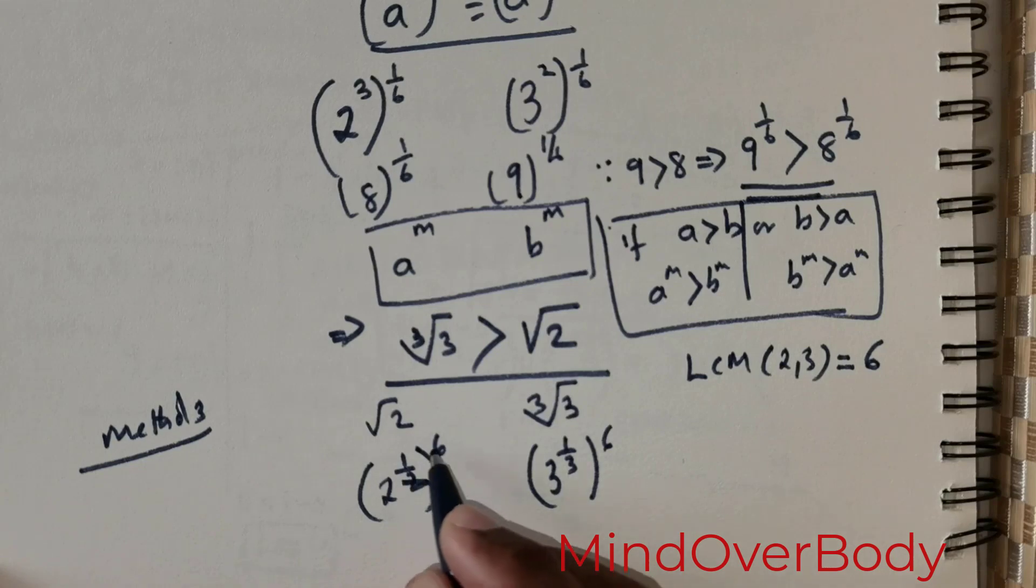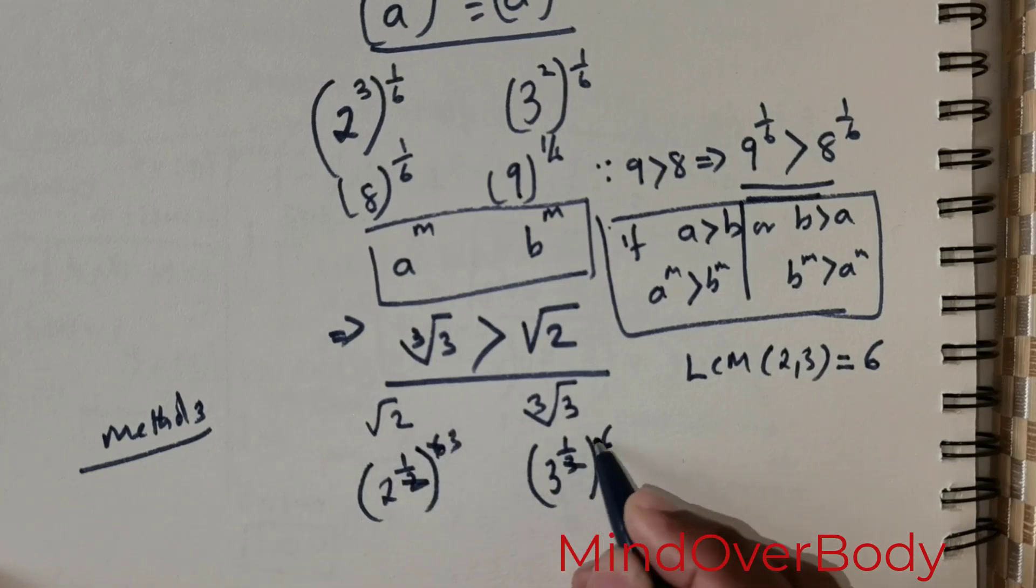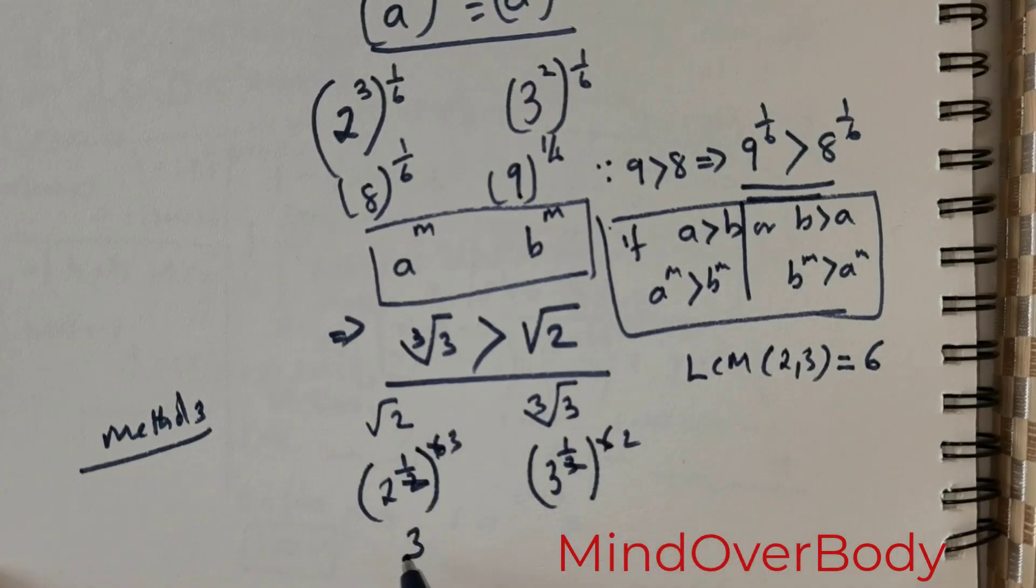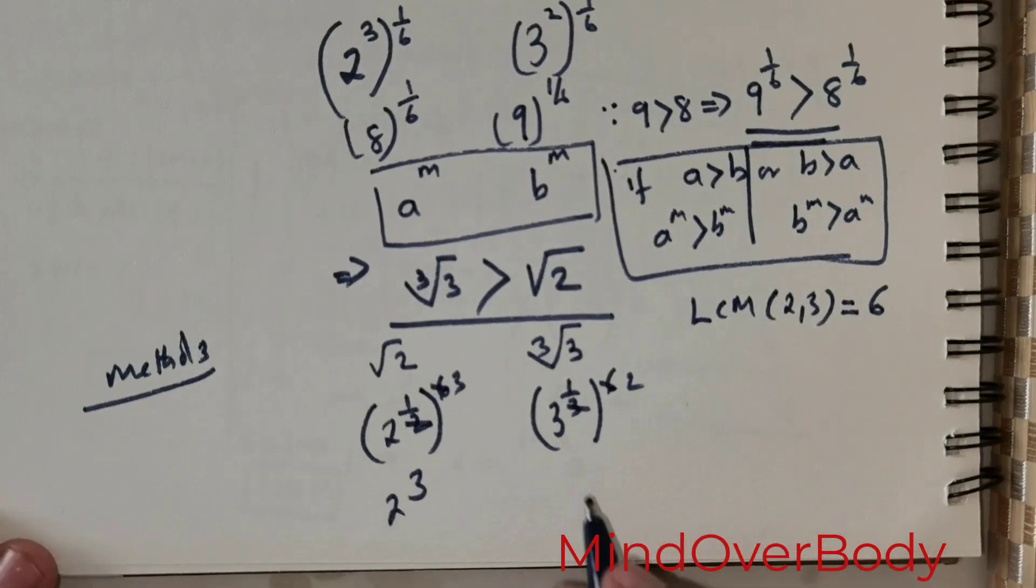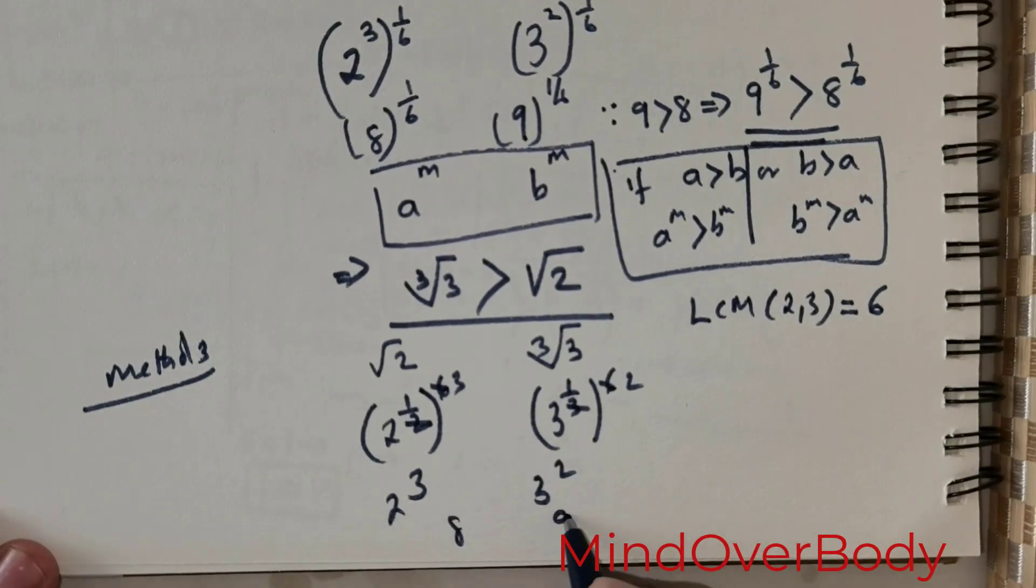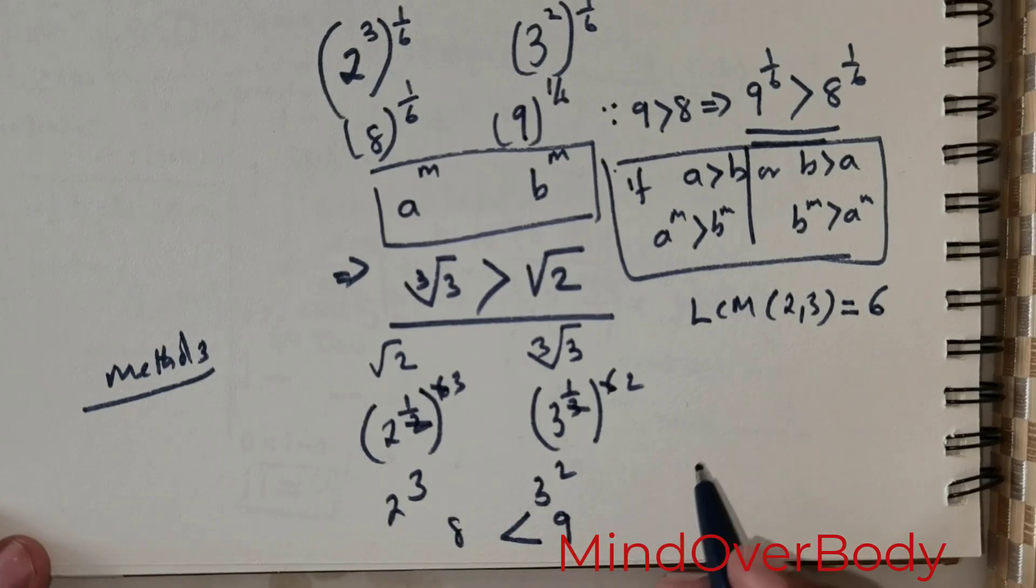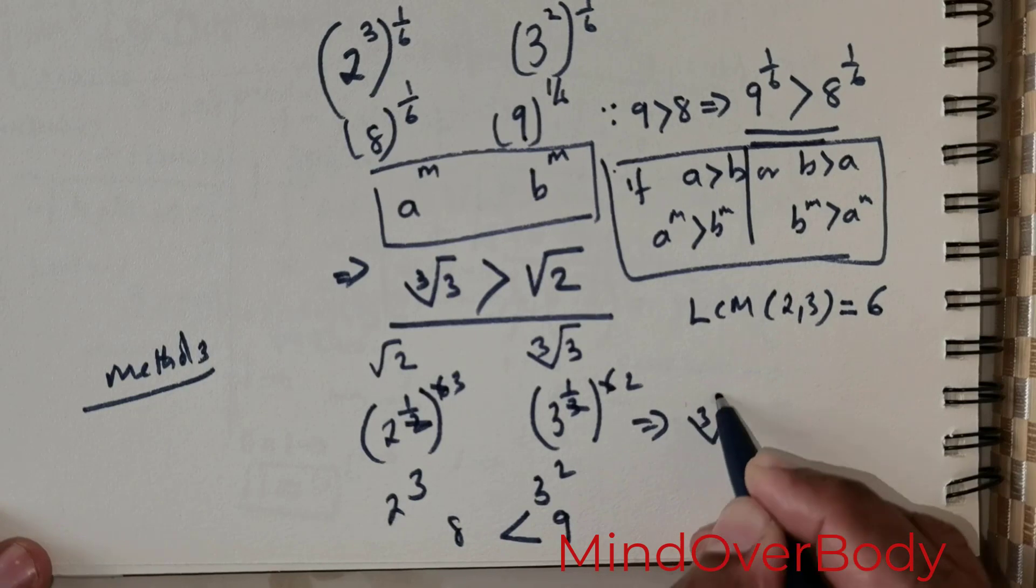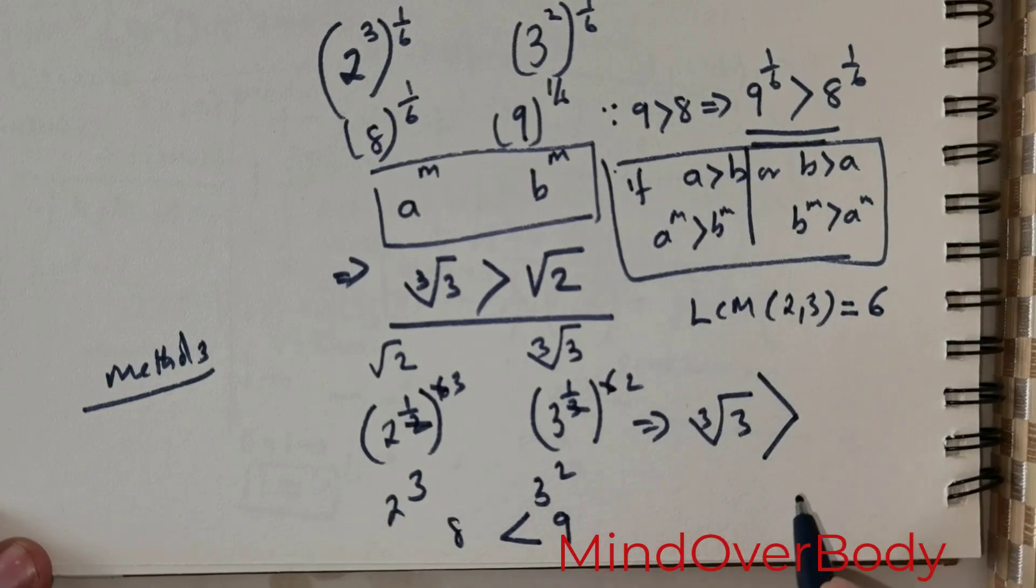Simple as that. So 2 divides 6 three times, 3 divides 6 two times. So you got 2 raised to the power 3 here and you got 3 raised to the power 2 here. This is going to be 8, this is going to be 9. Clearly 9 is greater than 8. So this would mean third root of 3 is the larger number than square root of 2.